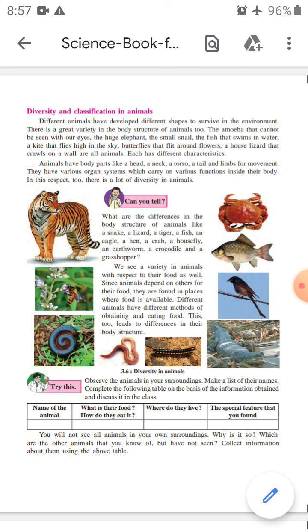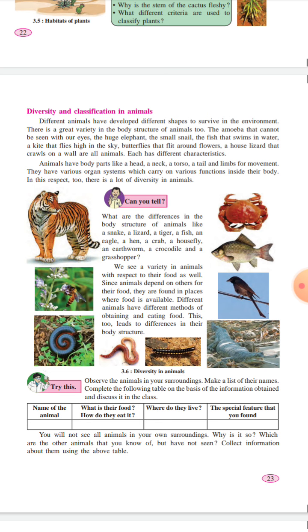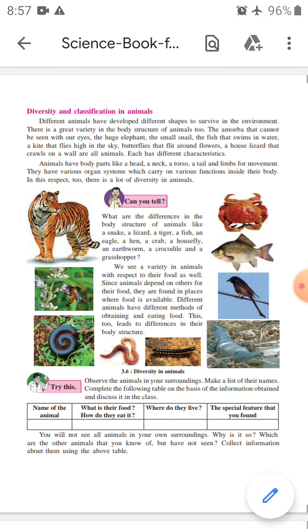What we observe is that students, there is great variety in the animals. Animals have body parts like a head, a neck, a torso, a tail, and limbs for movement. They have various organ systems which carry on various functions inside their body. In this respect too, there is a lot of diversity in animals.